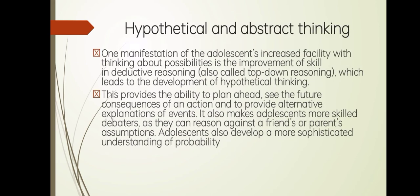Next, hypothetical and abstract thinking. One manifestation of adolescence's increased engagement with possibilities is improvement in skills in deductive reasoning, also called top-down reasoning, which leads to the development of hypothetical thinking. This provides the ability to plan ahead, see the future consequences of actions, and provide alternative explanations of events. It also makes adolescents more skilled debaters, as they can reason against a friend's or parent's assumptions.